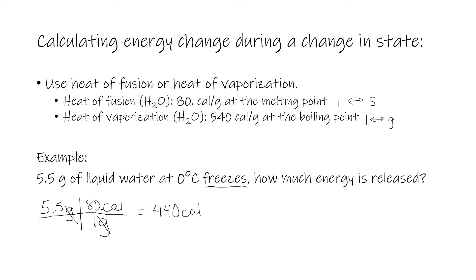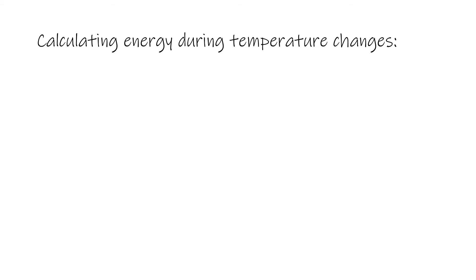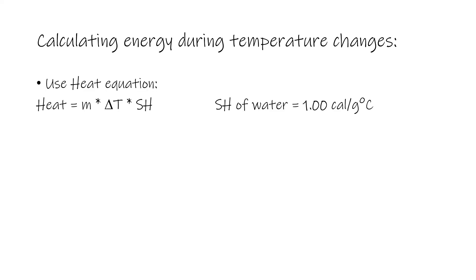Now let's look at calculating energy when temperature changes. We are going to use the heat equation: heat equals mass times change in temperature times specific heat. Specific heat is a measure of how much energy it takes to change the temperature of a specific amount of a substance. The specific heat of water is 1 calorie per gram per degree Celsius, meaning it takes 1 calorie of energy to change 1 gram of water by 1 degree Celsius.